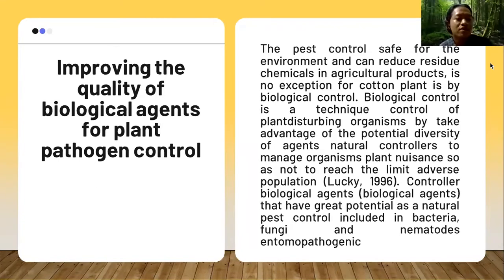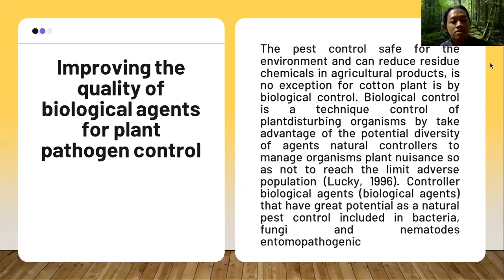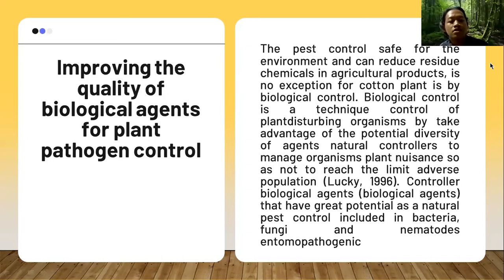Improving the quality of biological agents for plant pathogen control: the best control that is safe for the environment and can reduce chemical residue in agricultural products is biological control. Biological control is a technique for controlling plant-disturbing organisms by utilizing the potential diversity of natural control agents to manage plant organisms and reduce adverse population levels. Biological control agents with great potential include bacteria, fungi, and entomopathogenic nematodes.